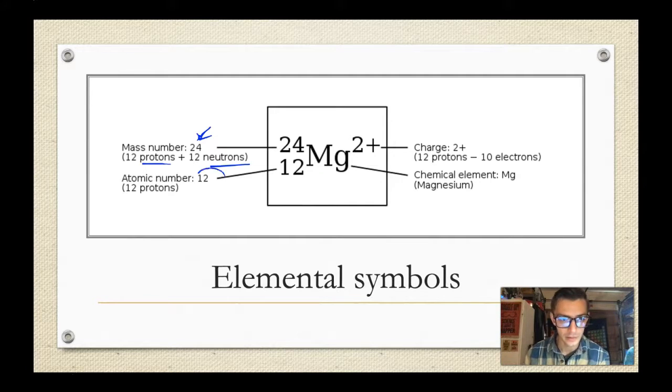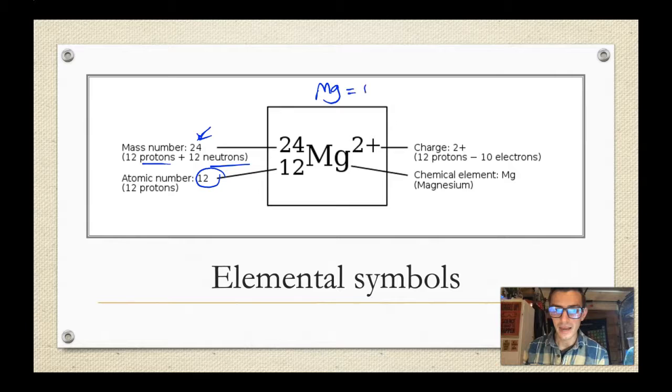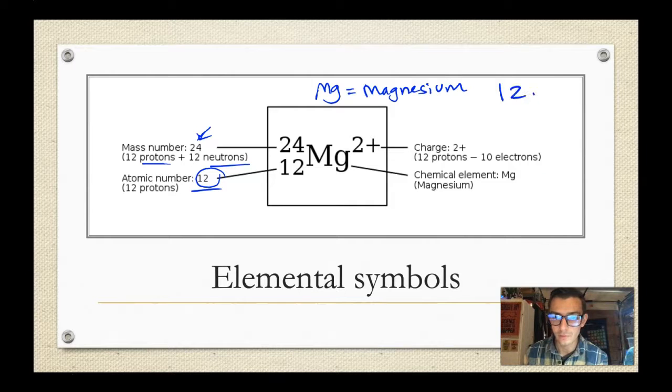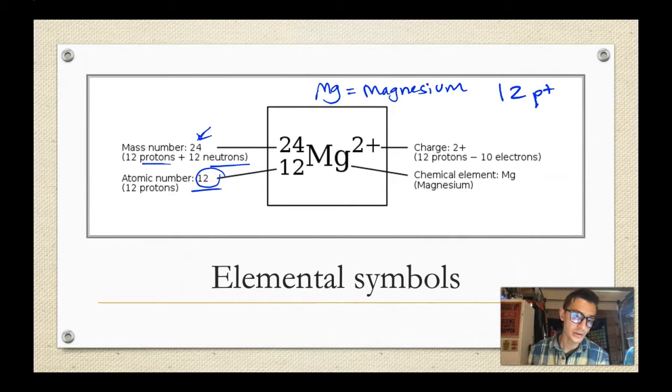The atomic number, though, which is the identity of the atom. The identity, by the way, is Mg, which stands for magnesium. This is just an example. Is 12. So magnesium will always have 12 protons. If I add a proton, I'm going to change it to the next element in the list. If I take one away, I'm going to change it back to the element prior on the list on the periodic table. So that determines the letter.